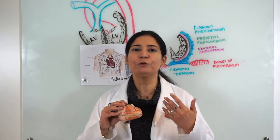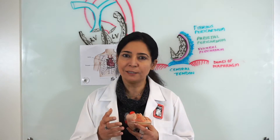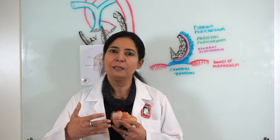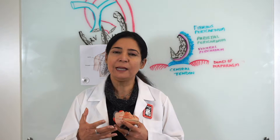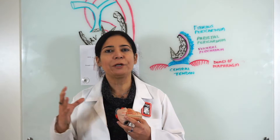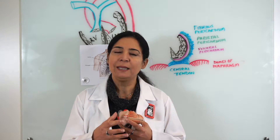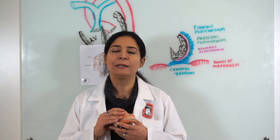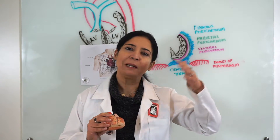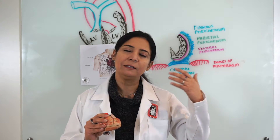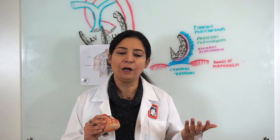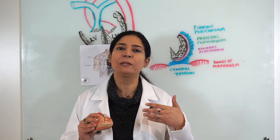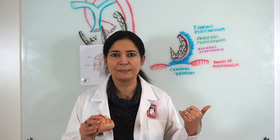Hello, everybody. In this session, I'm going to talk about the external and internal features of the heart. I'm going to mention the position of the heart, how it has been placed in the chest cavity, its connections, anchoring points, and the coverings of the heart. In the next session, I will be discussing the blood vessels and structures emerging out of the heart, the coronary circulation, the blood supply to the heart itself, and the conducting system of the heart.